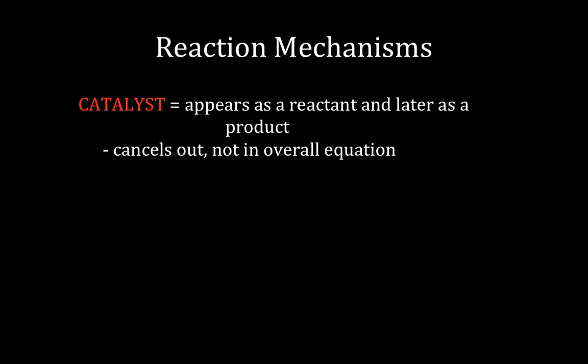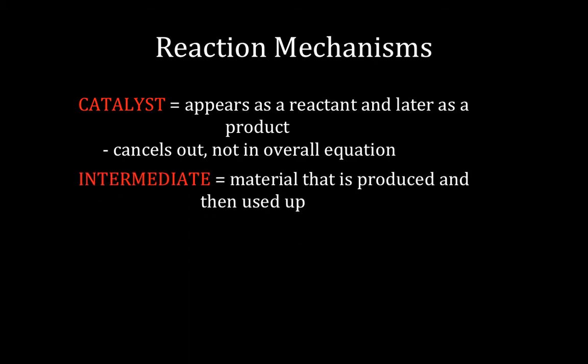A catalyst, we talked about in an earlier video, it's a chemical that is used essentially as a reactant, but by the end of the overall reaction, it's regenerated. And so we use it up, get it back, so there's no net difference in the amount from the start to the finish. There are other things we're going to say about catalysts later on. And the intermediate is kind of the opposite. It's something that's made in one step and then used up in a later step.